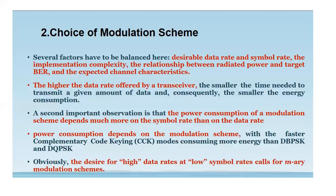The second consideration under modulation scheme is power consumption, which depends on the symbol rate rather than the data rate. It is desirable to achieve a high data rate at a low symbol rate. M-ary modulation schemes provide this — they operate with high data rate and low symbol rate. A faster mode, Complementary Code Keying (CCK), consumes more energy than DBPSK (Differential Binary Phase Shift Keying) and DQPSK (Differential Quaternary Phase Shift Keying).